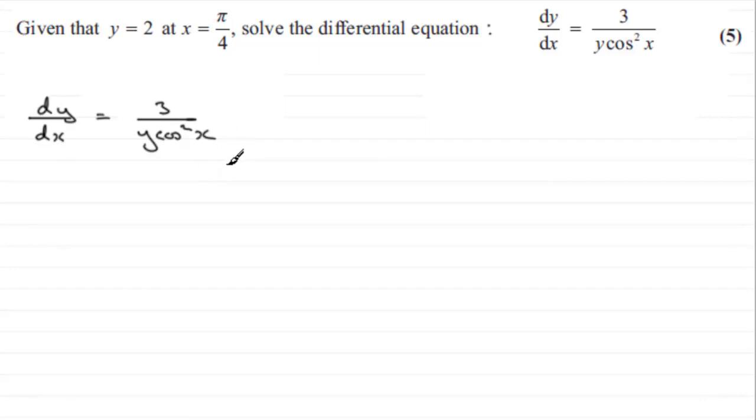When we have a differential equation like this, what we've got to do is separate the variables—that is, put the y's on one side on the left-hand side and all the x parts on the right-hand side. So what I'm going to do is times both sides by y and remove the dx.